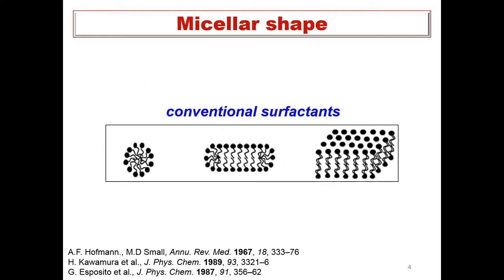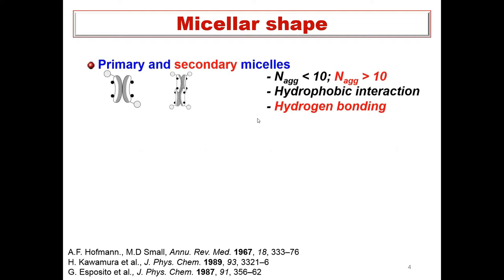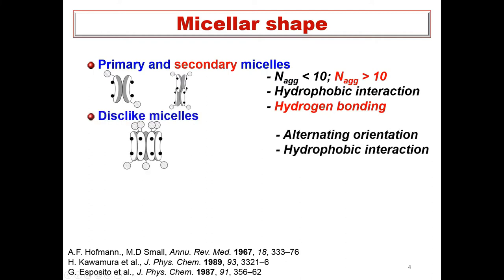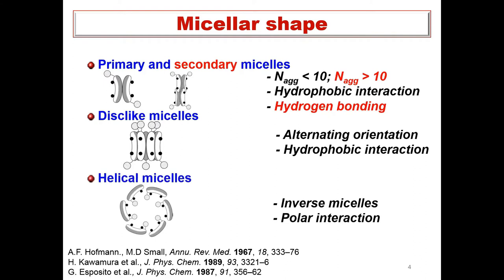Conventional surfactants, which contain a hydrophilic head and hydrophobic tail, form spherical or cylindrical micelles or lamellar phases depending on concentration. But due to the specific chemical structure of bile salts, they form different micelles called primary and secondary micelles. Primary micelles are characterized by aggregation numbers below 10, stabilized by hydrophobic interactions and hydrogen bonding. Primary micelles further form secondary micelles with aggregation numbers above 10, and can also form disc-shaped or helical micelles under specific conditions.